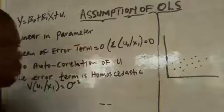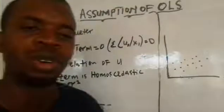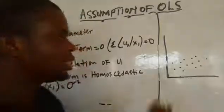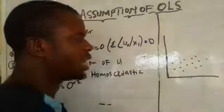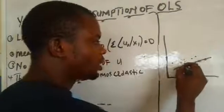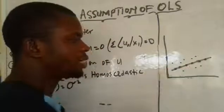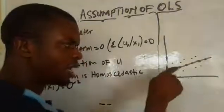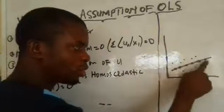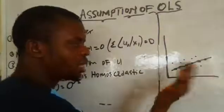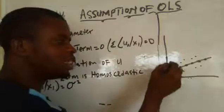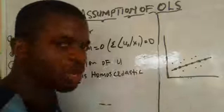The second assumption is that the mean of the error term will be zero. When we say mean of error term, we are talking about residuals. Residual is the difference between the point and the corresponding point on the fitted line. If I fit a line through the data points, there are points on the line, some points above the line and some below. Each point above the line has its own corresponding point on the fitted line, and the difference between that point and its corresponding point on the fitted line gives us our residual.